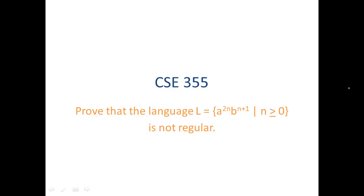In this video, we will prove that the language L, which is the set of strings a to the 2n, b to the n plus 1, with n greater than or equal to 0, is not regular. And we're going to use the pumping lemma for regular languages to prove this.